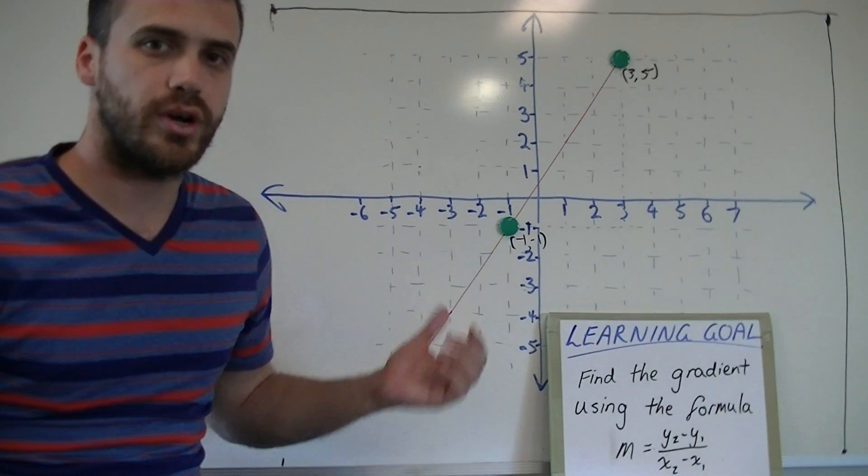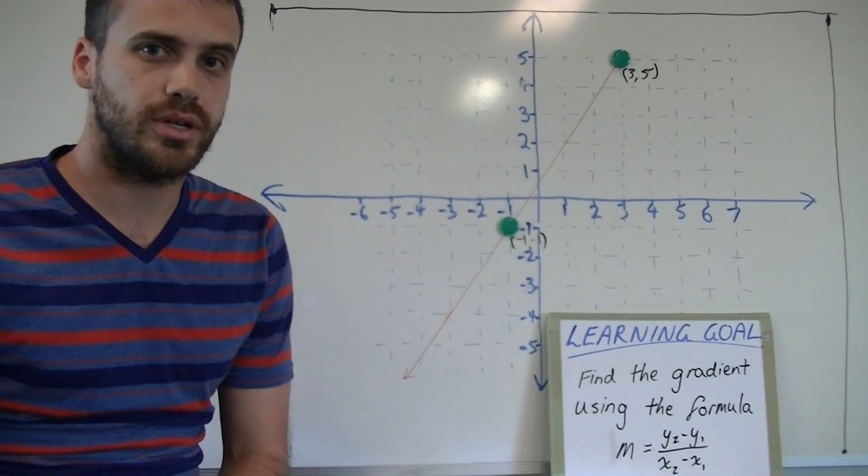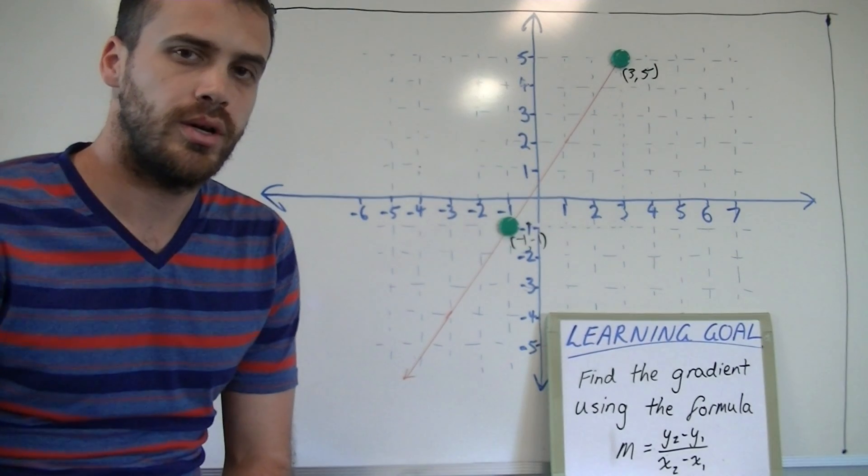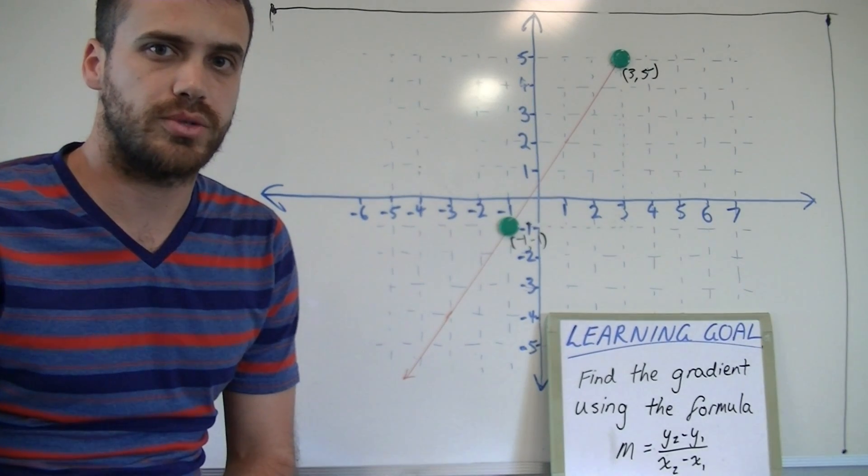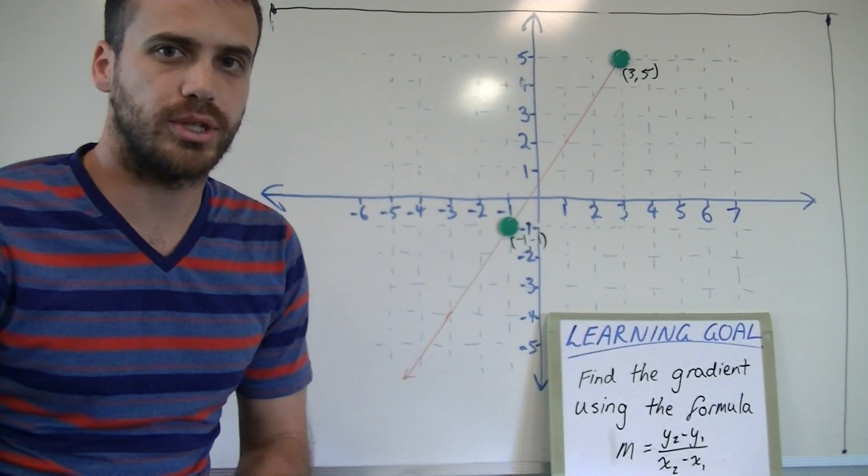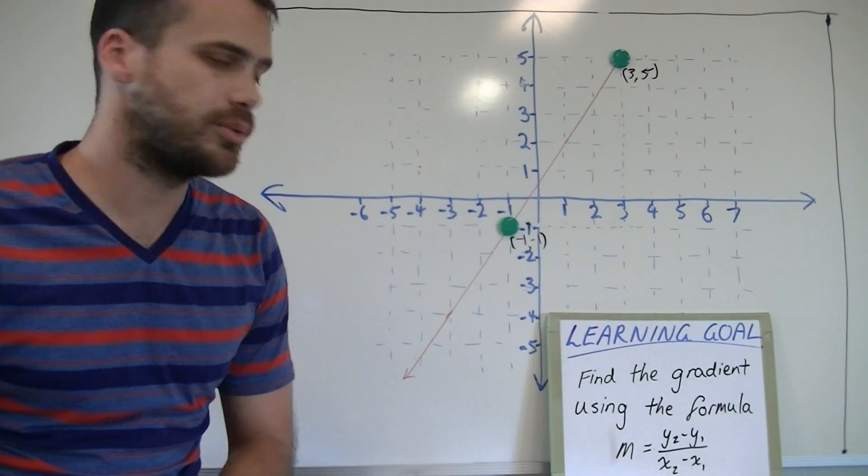In this video we're finding the gradient again, but this time we're using the formula m equals y2 minus y1 over x2 minus x1. This is revision, so you shouldn't be having too much trouble with this, but we will run through an example.